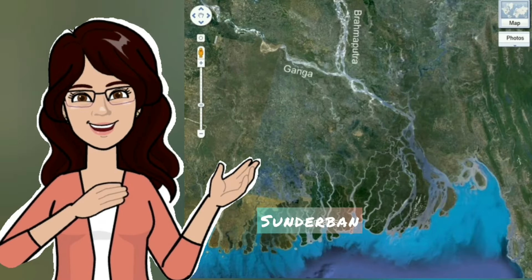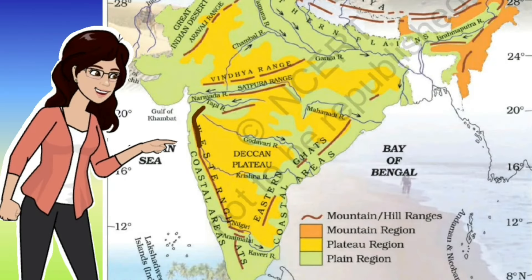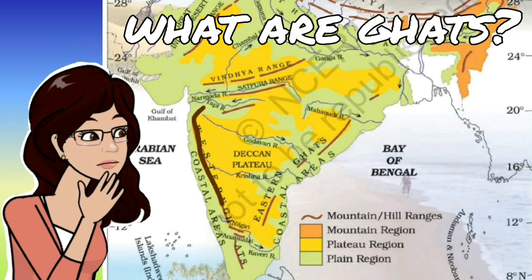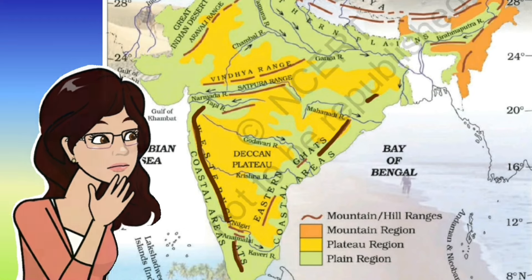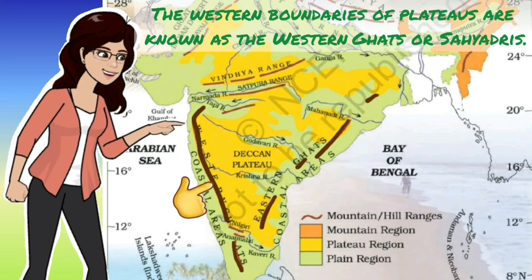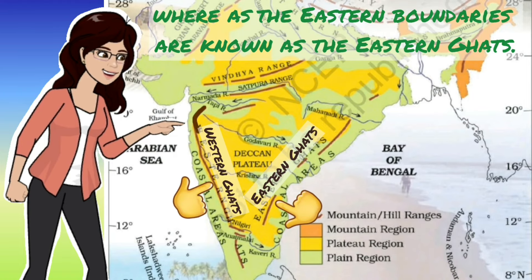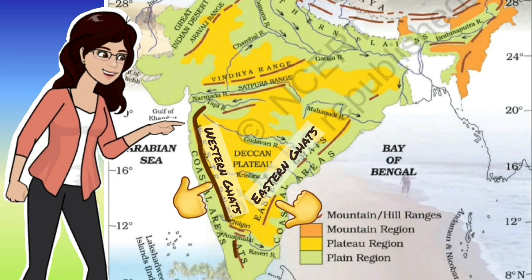The largest delta is the Sundarban delta. Now, two important landforms to locate are the two Ghats — the edges of the plateau. The western boundaries of the plateau are known as the Western Ghats or Sahyadris, whereas the eastern boundaries are known as the Eastern Ghats. The Western Ghats are almost continuous, whereas the Eastern Ghats are broken and uneven.